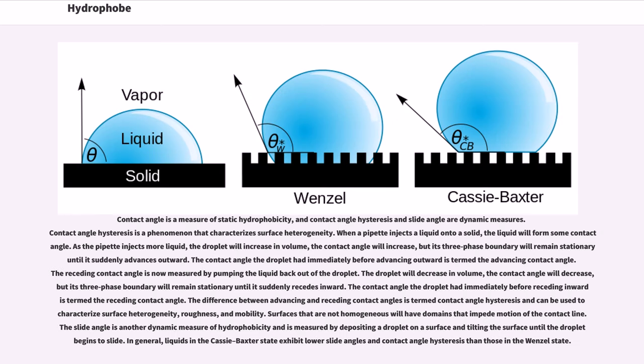Contact angle is a measure of static hydrophobicity, and contact angle hysteresis and slide angle are dynamic measures. Contact angle hysteresis is a phenomenon that characterizes surface heterogeneity.